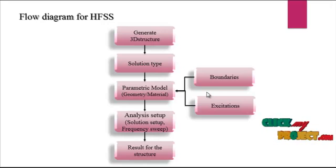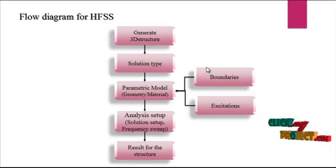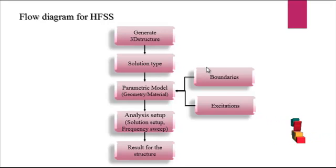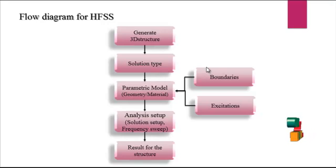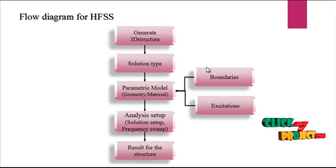The boundaries will be applied to two types: the patch antenna and the ground plane. Perfect E must be applied to the patch and the ground. Excitation must be calculated as a feeding part of the ground — here we are using a microstrip line feed, and the wave port is applied. Then analysis setup: start and stop frequency, calculating the center frequency of the process. The result of the structure includes return loss, radiation pattern — either 3D or 2D. These are the overall flow diagram of the HFSS design.